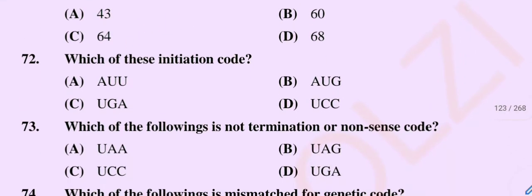Question number 72: Which of these is an initiation codon? Option A: AUU, Option B: AUG, Option C: UGA, Option D: UCC. So the correct option is Option B, AUG is an initiation codon.